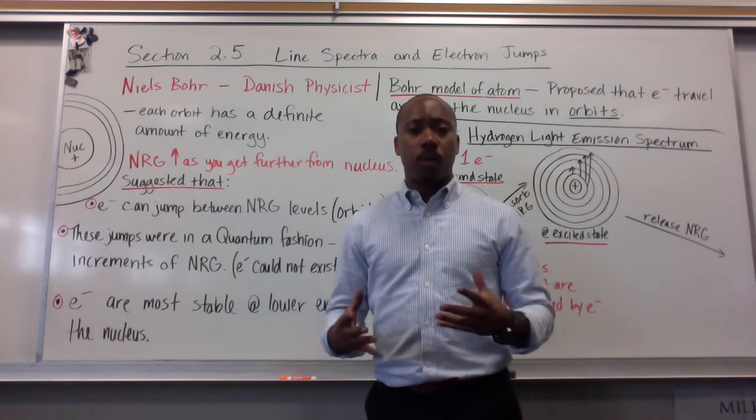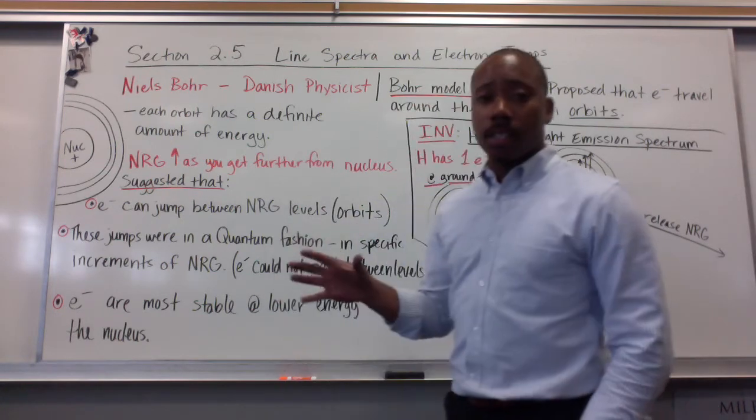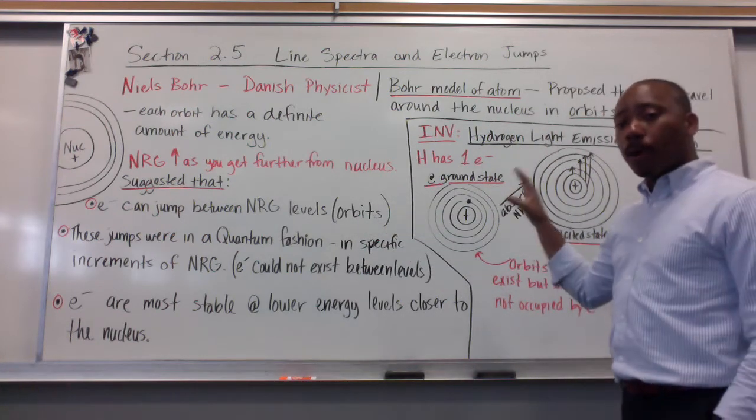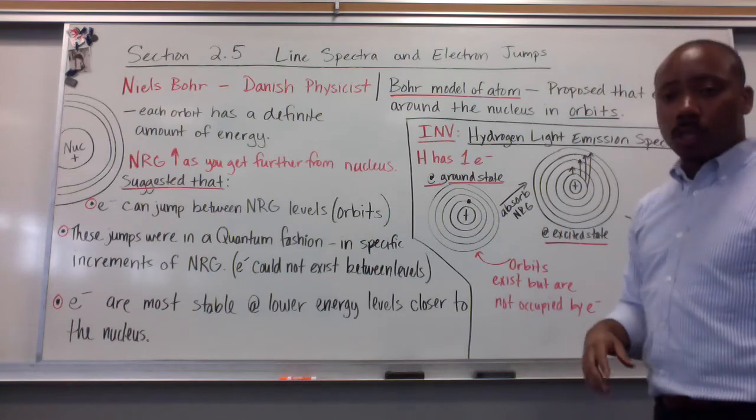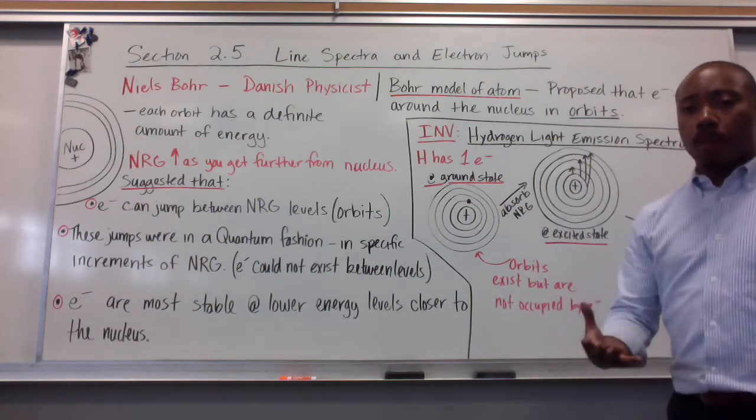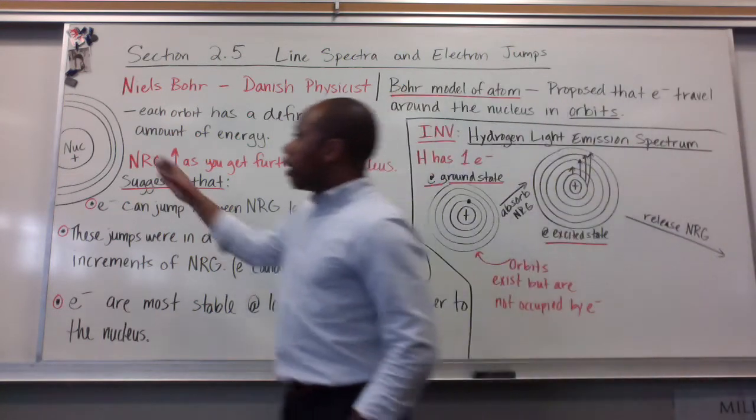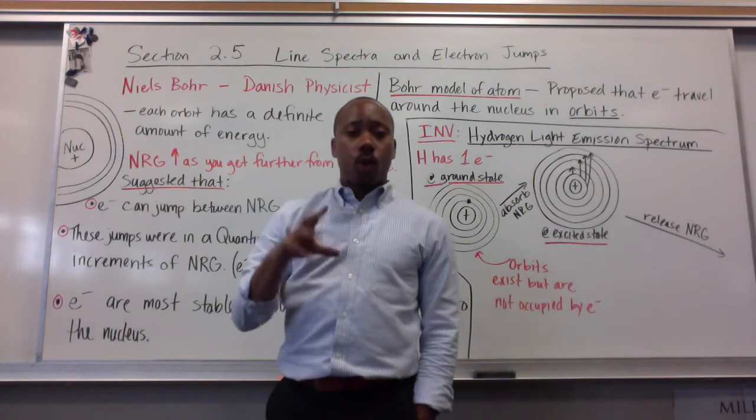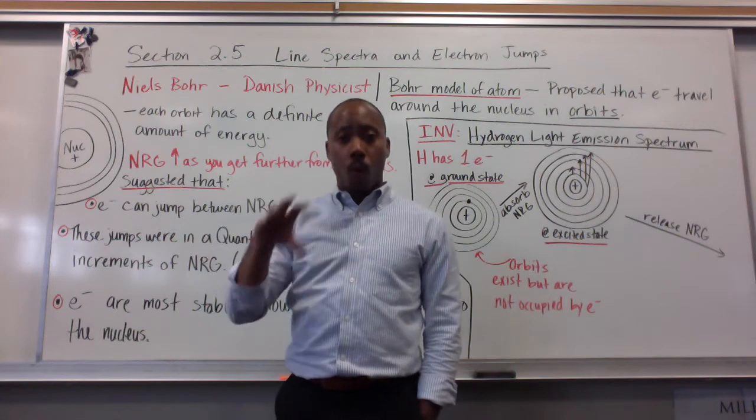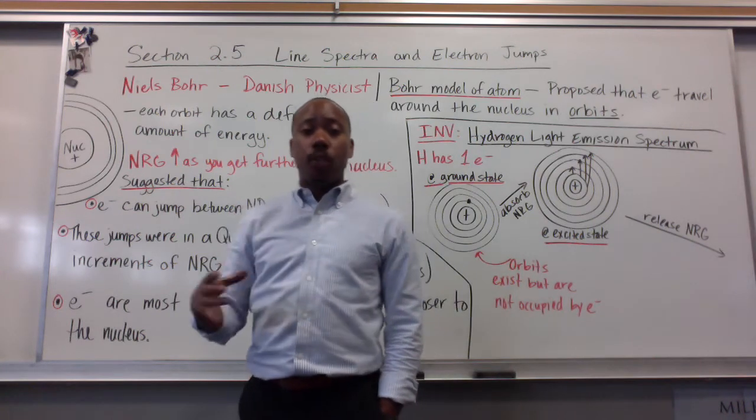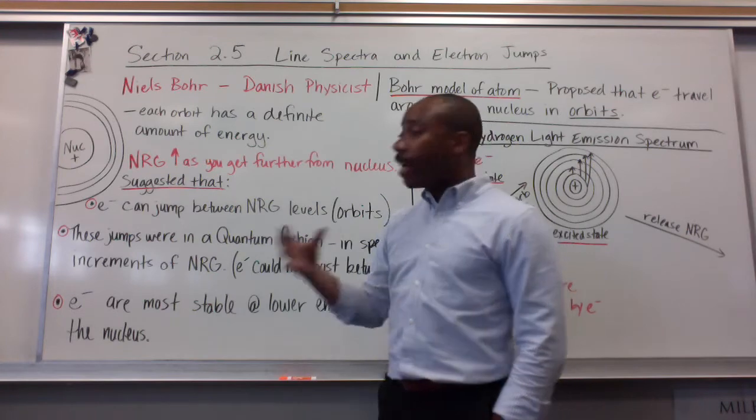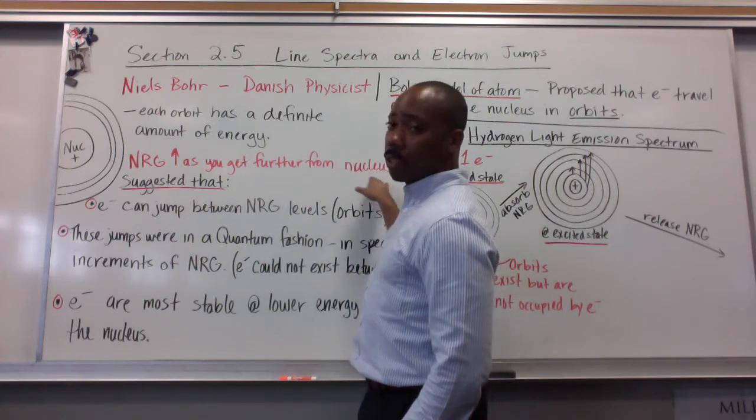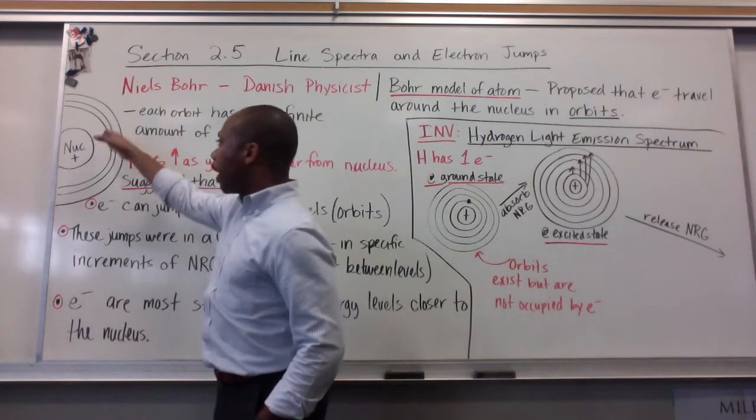Today we've mentioned a guy named Niels Bohr. Niels Bohr was a Danish physicist who created the Bohr model of the atom. This model proposed that electrons travel around the nucleus in what we call orbits. Now, if our nucleus is here, we have outside the electron cloud, and those electrons are found in orbits. Each orbit has a defined amount of energy. He said that energy increased as you got further from the nucleus. So as you got further out, energy increased.